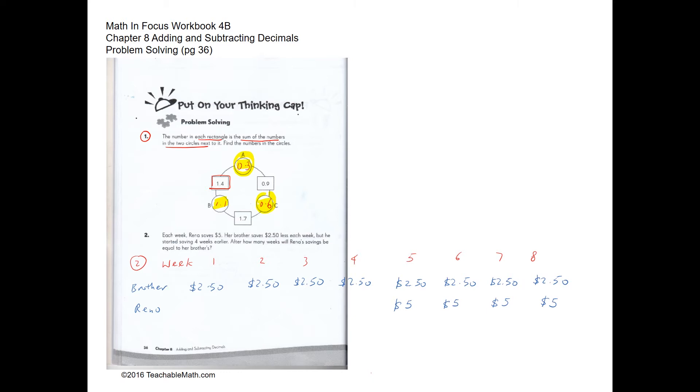Question two. Each week, Rina saves $5. So Rina saves $5. And her brother saves 2.5 less each week, which is $2.5. And he started saving 4 weeks earlier. So 1, 2, 3, 4. He started 4 weeks earlier. So after how many weeks would Rina savings be equal to the brothers? So we are going to have $20. And after 4 weeks of saving from Rina, she's going to have $20. So 8 weeks later, they're going to save the same amount of money.